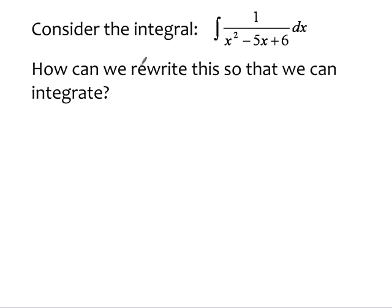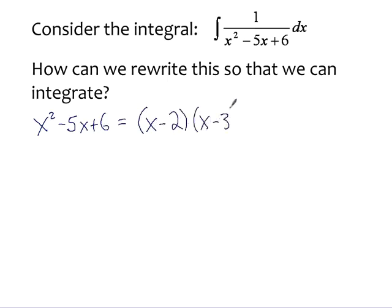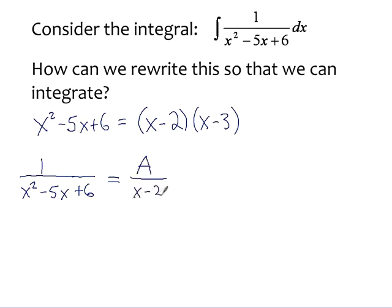Let's look at that denominator and notice that it factors. We've got x squared minus 5x plus 6 and we can factor that to x minus 2 times x minus 3. Because of that, we are able to take the expression in the integrand and rewrite it in terms of those two factors. That is to say, there is some number A over x minus 2 plus another number B over x minus 3 that will produce this.